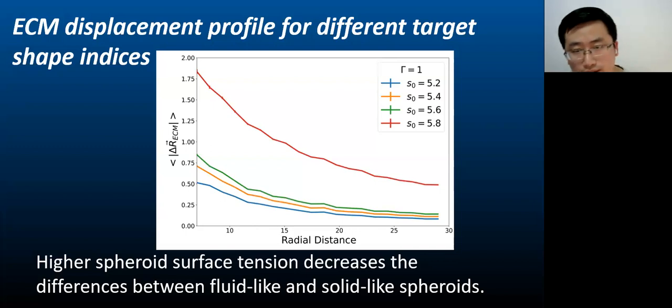Then we study the effect of the interfacial surface tension between the spheroids and the outer space. We found that if we increase the gamma factor, which is the magnitude of the interfacial surface tension term, then we see slightly less difference between fluid-like spheroids and solid-like spheroids. With higher interfacial surface tension, the spheroid is more round, it's more spherical.